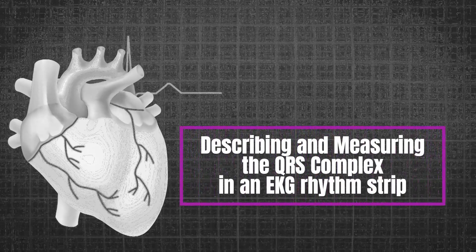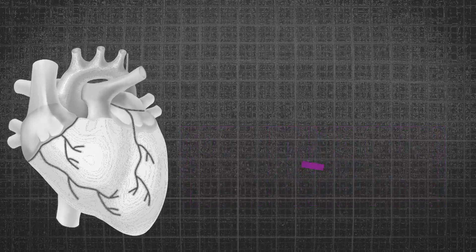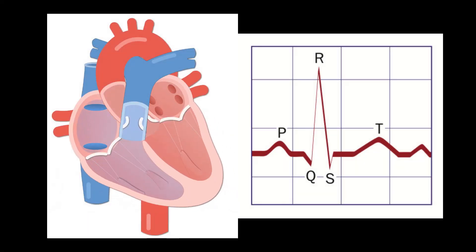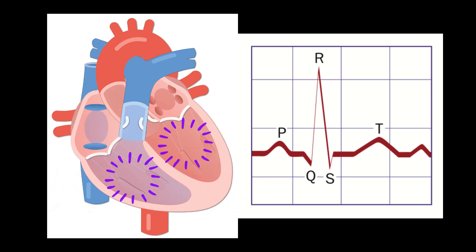Welcome to this tutorial on describing and measuring the QRS complex in an EKG rhythm strip. The QRS complex is an important component of the ECG that represents the electrical activity of the ventricles of the heart.